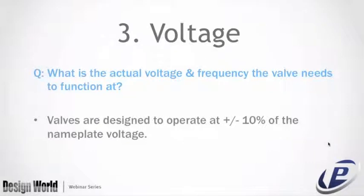Voltage: what is the actual voltage and frequency the valve needs to function at? Valves are designed to operate at plus or minus 10% of nameplate voltage. Common AC voltages are 24V/60Hz, 120V/60Hz, 240V/60Hz, and 230V/50Hz for Europe. Common DC voltages are 6V, 12V, 24V, and 48V DC.